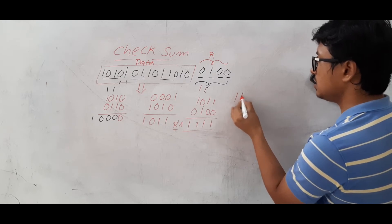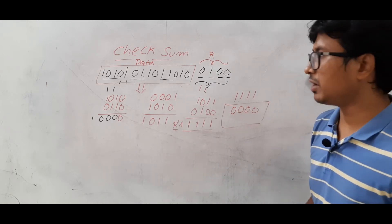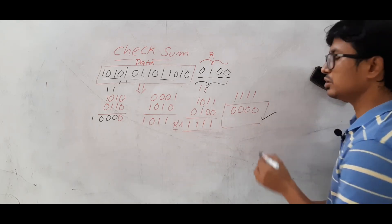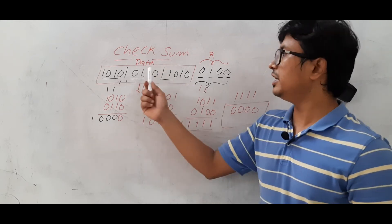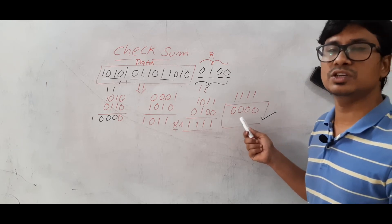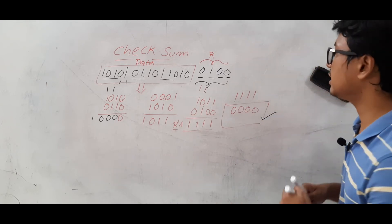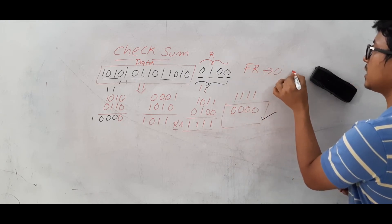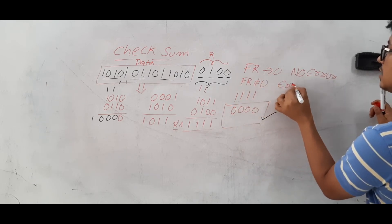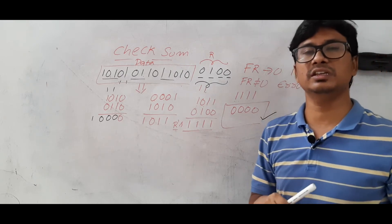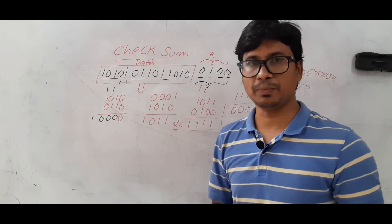After performing the ones complement addition of all the received blocks including the redundant bits, the result is 1111. The ones complement of 1111 is 0000. So after taking the ones complement you get 0 0 0 0 — all zeros. If the final result is all zeros, the receiver confirms the data was received correctly. If any bit was modified during transmission, the final result will not be all zeros, indicating an error.